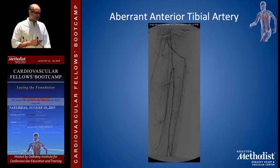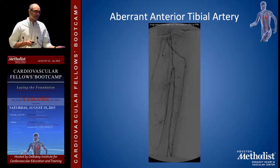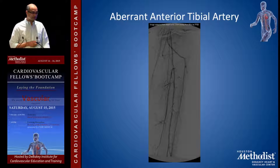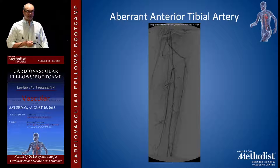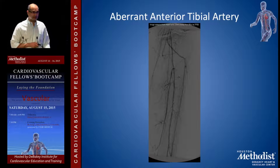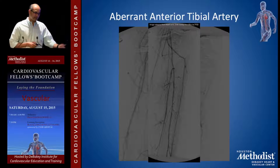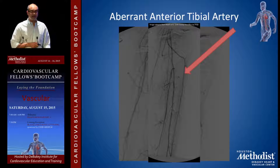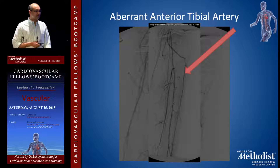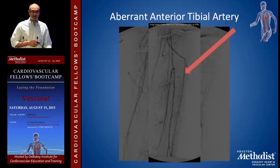Then there is the aberrant anterior tibial artery anomaly. This is important when you intervene and on CT angio you don't see a standard AT coming off, but on angiogram you see something coming off at the top — it comes from the popliteal artery above the knee. Just keep in mind that these anomalies can exist.